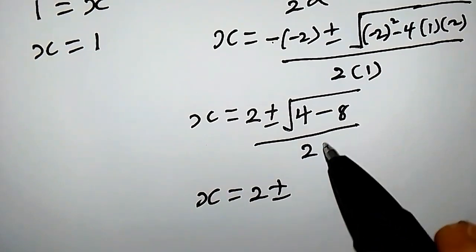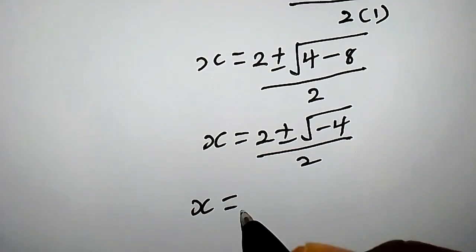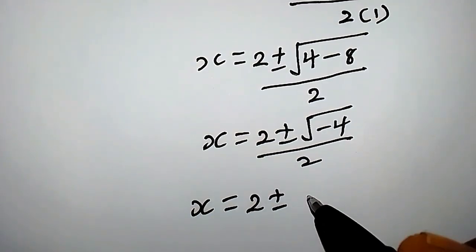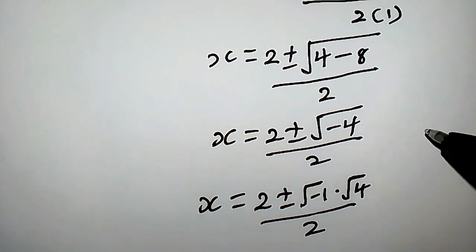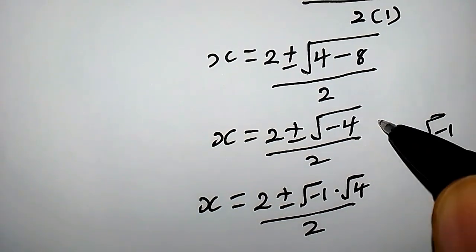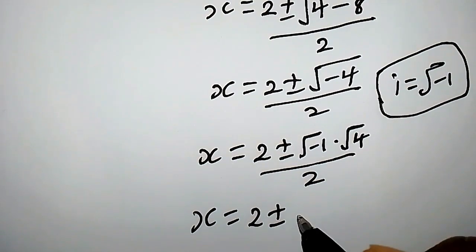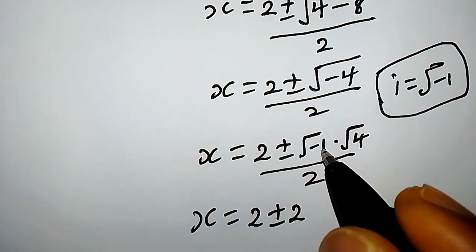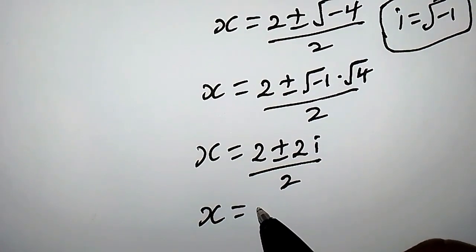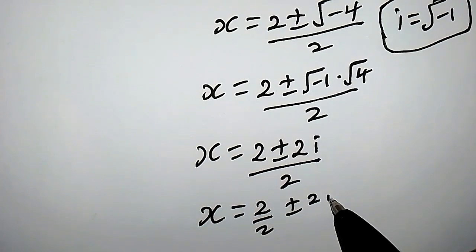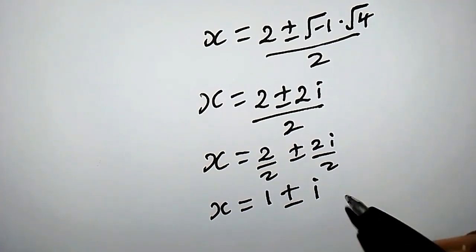Now, the square root of negative 4 can be written as the square root of negative 1 times the square root of 4. Note that i equals the square root of negative 1 — this comes from complex numbers. So the square root of 4 is 2, and the square root of negative 1 is i, giving us 2i. Therefore x equals 2 plus or minus 2i, all over 2, which simplifies to 1 plus or minus i.